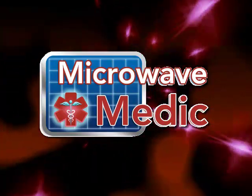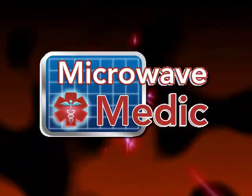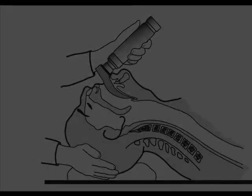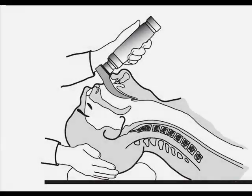Okay, this video I just want to quickly go over the differences between a Macintosh or curved blade and the Miller or straight blade when performing endotracheal intubation. You want to try to get the patient in a sniffing position as shown here in this picture, unless of course the patient has some type of cervical spine injury.